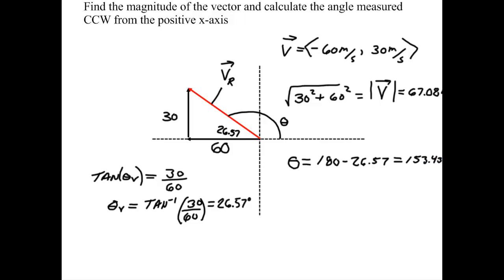So we pretty much have this thing solved. And now all we have to do is write this vector, and we can write this as the vector is equal to 67.08 meters per second with a theta of 153.43 degrees. And that's how we would show it. And that would be our answer. Let's try another one.